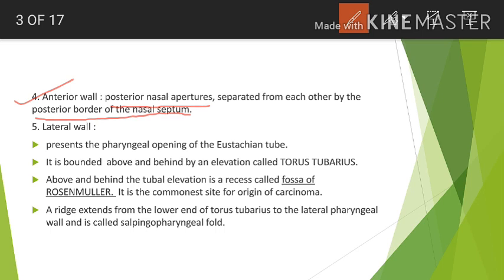The most important wall is the lateral wall of the nasopharynx. Each lateral wall presents the pharyngeal opening of the eustachian tube, situated 1.25 cm behind the posterior end of the inferior turbinate. This opening is bounded above and behind by an elevation called the torus tubarius.